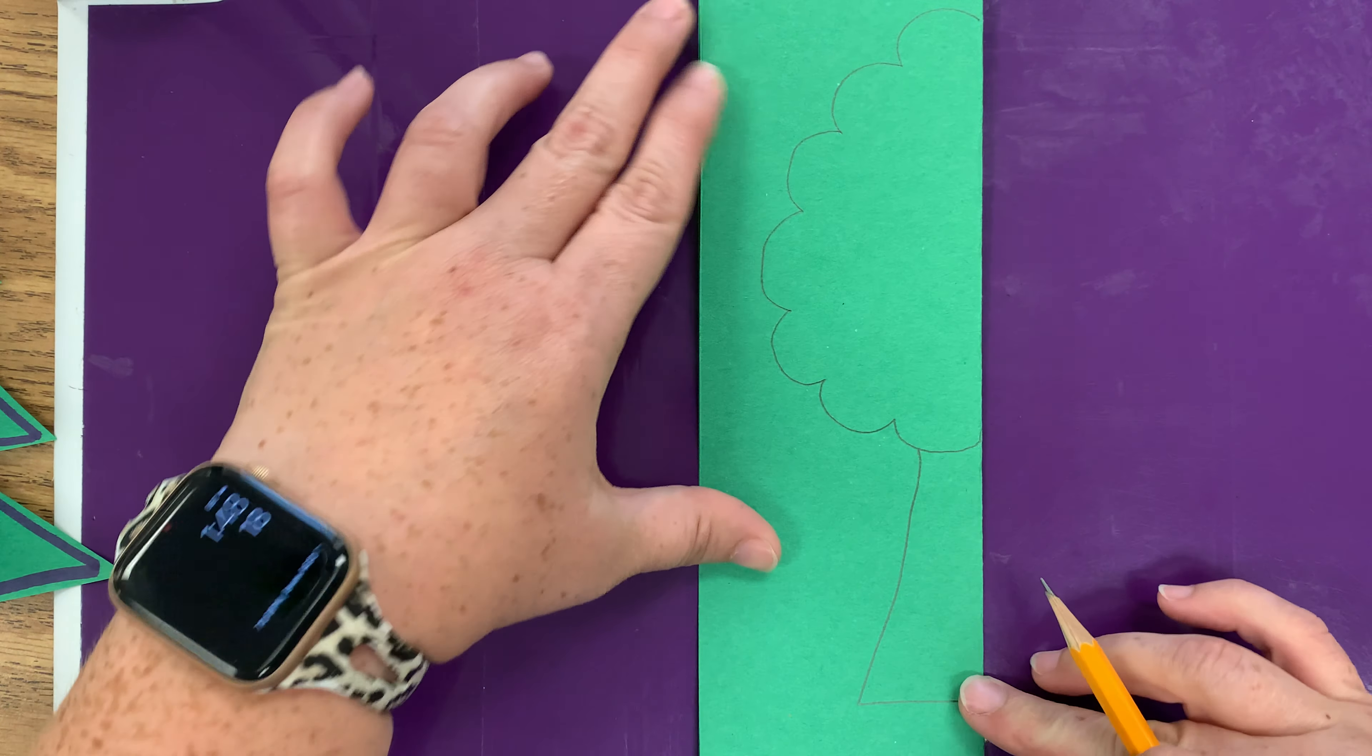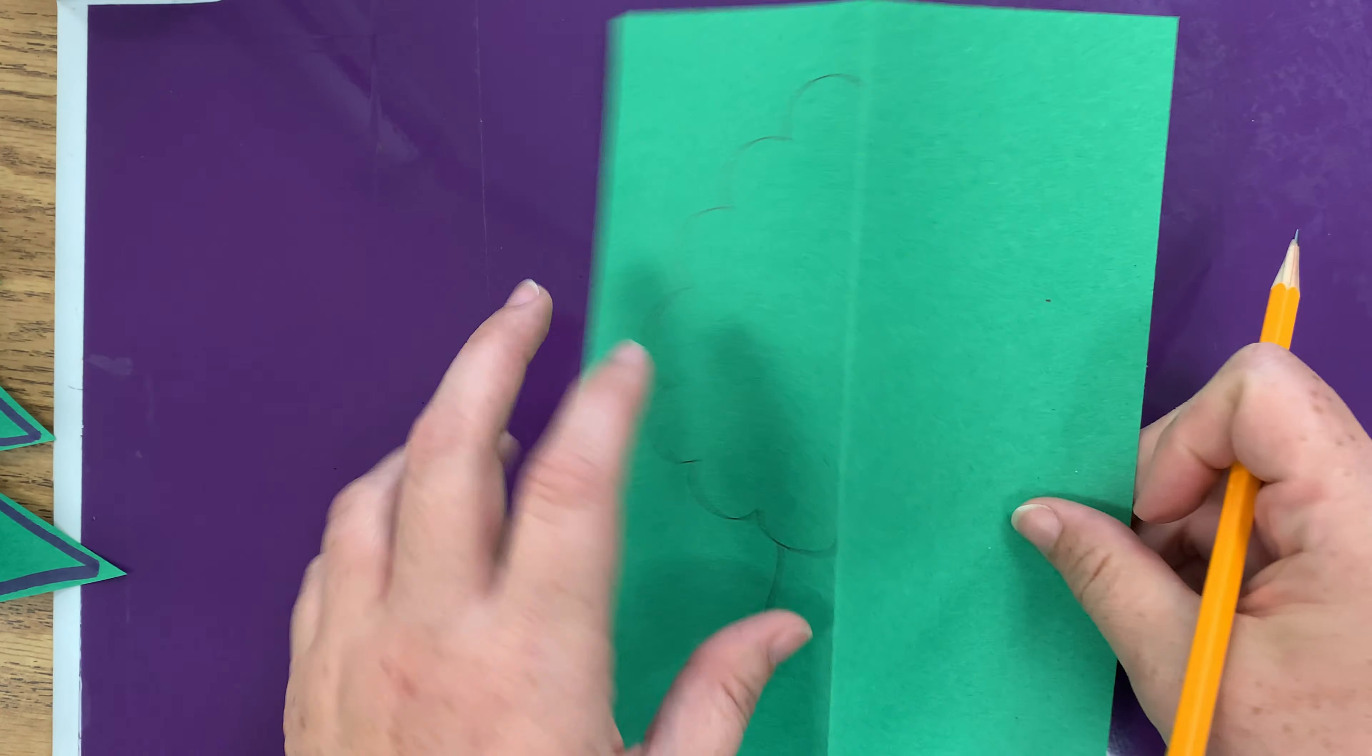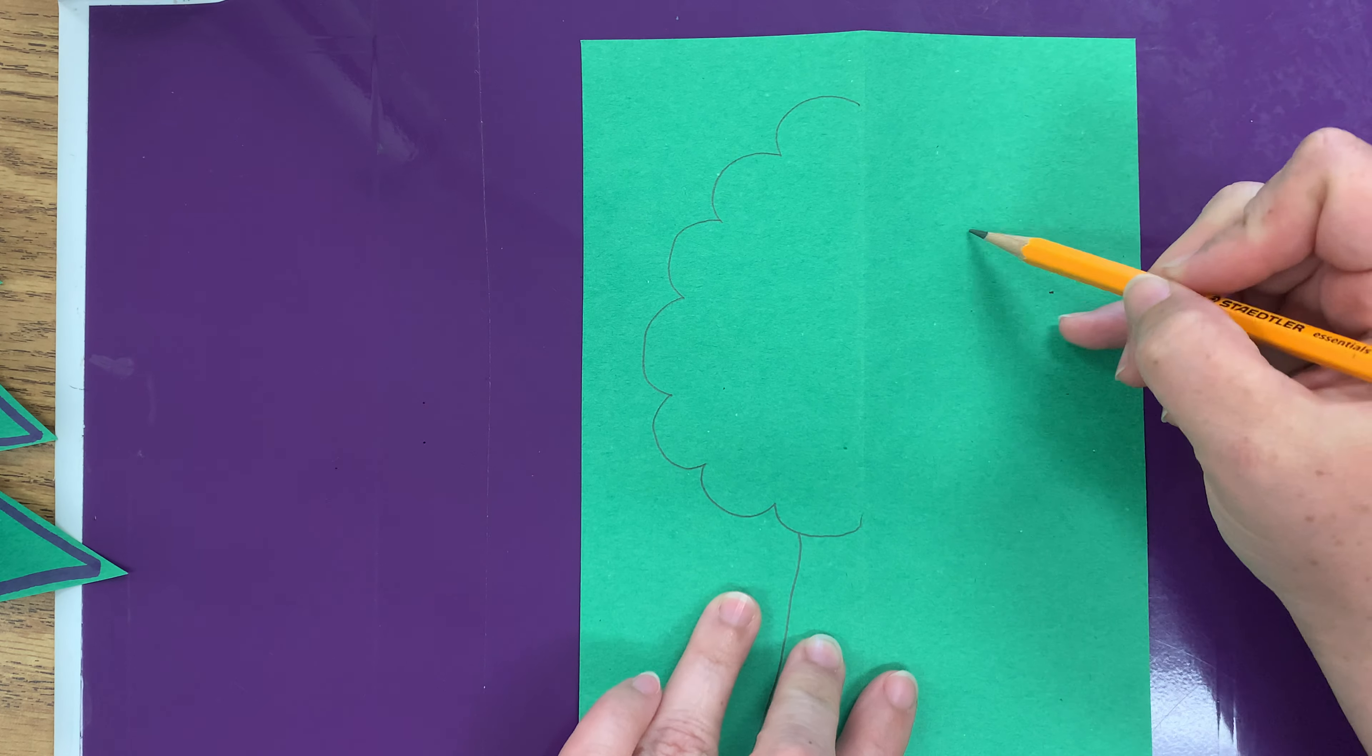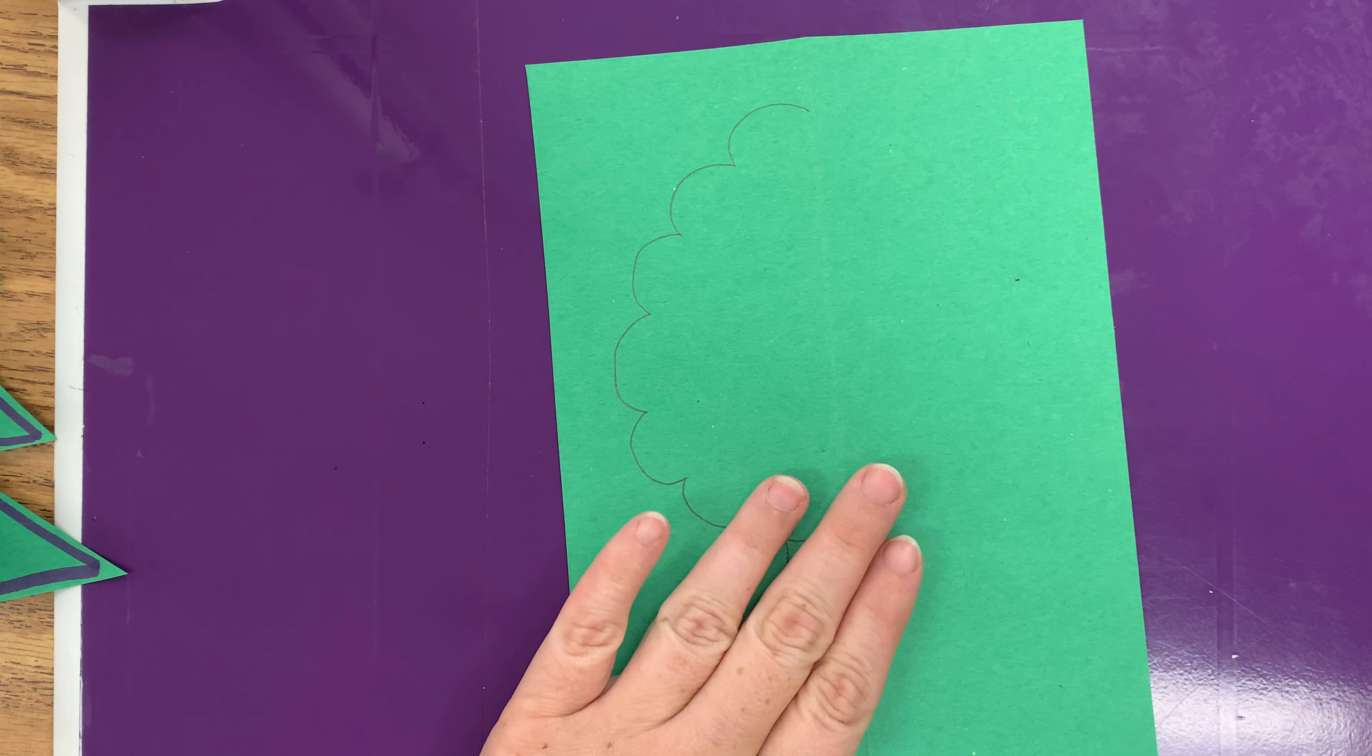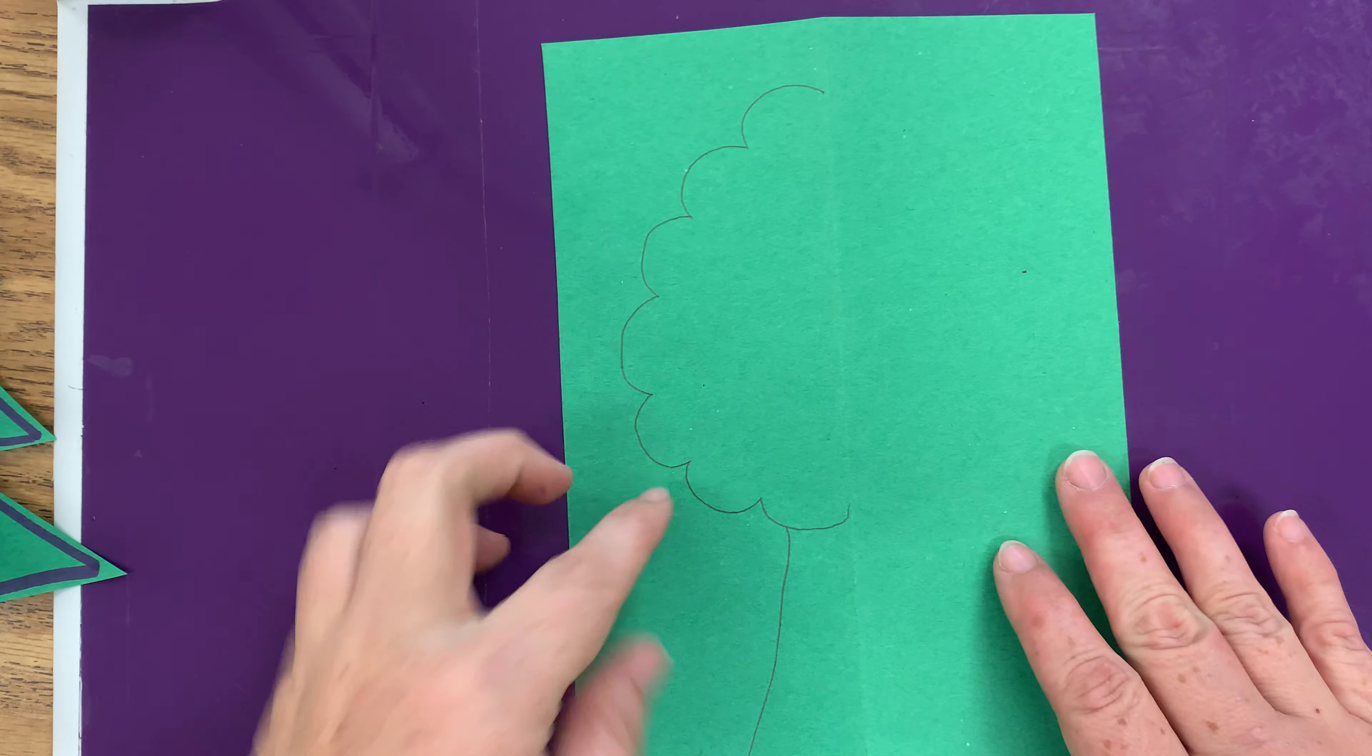This is just half of your tree. If you were to open it up on that line of symmetry, you would have the other half. But we don't have to draw that half because we're gonna cut along what we drew.